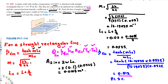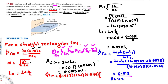Now we have all the values to calculate q_fin. Plugging in: q_fin equals 0.813 times 154 times 0.0105 times (350 minus 25). Calculating this gives q_fin equals 427.252 watts. We have now found the efficiency and the heat transfer rate.